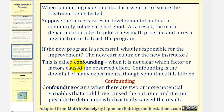This is called confounding. When it is not clear which factor or factors cause the observed effect, confounding is the downfall of many experiments, though sometimes it can be hidden. Confounding occurs when there are two or more potential variables that could have caused the outcome and it is not possible to determine which actually caused the result.